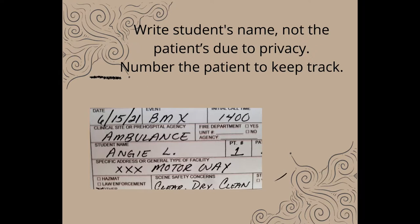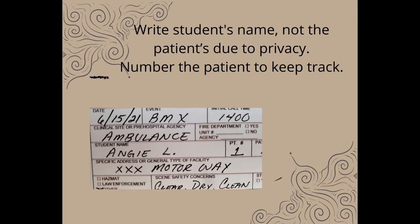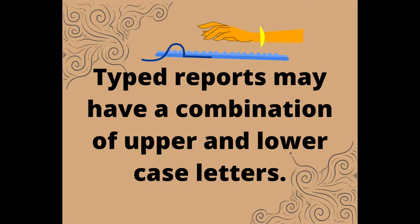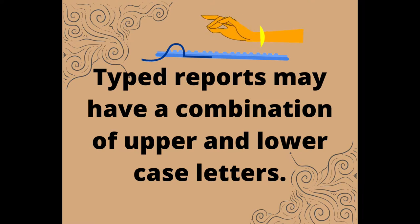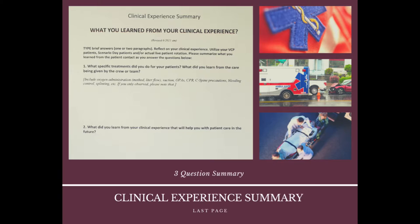Students are not allowed to write the patient's name on the PCR. Instead, the student must write their own name and immediately after they may write down the patient number to keep track of who they're writing about. Typed reports may have a combination of uppercase and lowercase words, but no lowercase letters on words that require capitalization, such as names, titles, streets, cities, and so on.